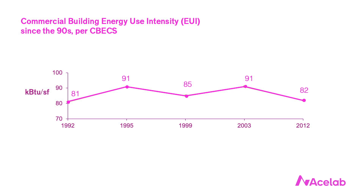The 2018 data is set to be released later in 2022. In any case, this data does not make our industry look particularly impressive. And note that this is energy use per square foot. Over this same period, the number of commercial buildings has increased, and those buildings are on average larger. In 1992, we had almost 70 billion square feet of commercial space, and in 2012 we were up to almost 90 billion square feet. So the consequences of our lack of progress are underrepresented by this chart.